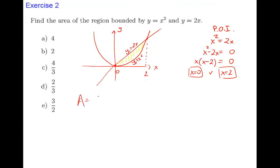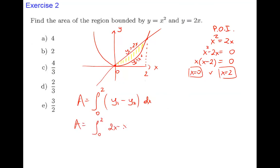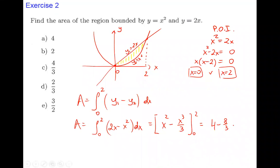The area is the integral from 0 to 2 of (2x − x²) dx. Integrating: x² − x³/3, evaluated from 0 to 2. Substituting 2: 4 − 8/3 = 12/3 − 8/3 = 4/3. That's the area of the region.